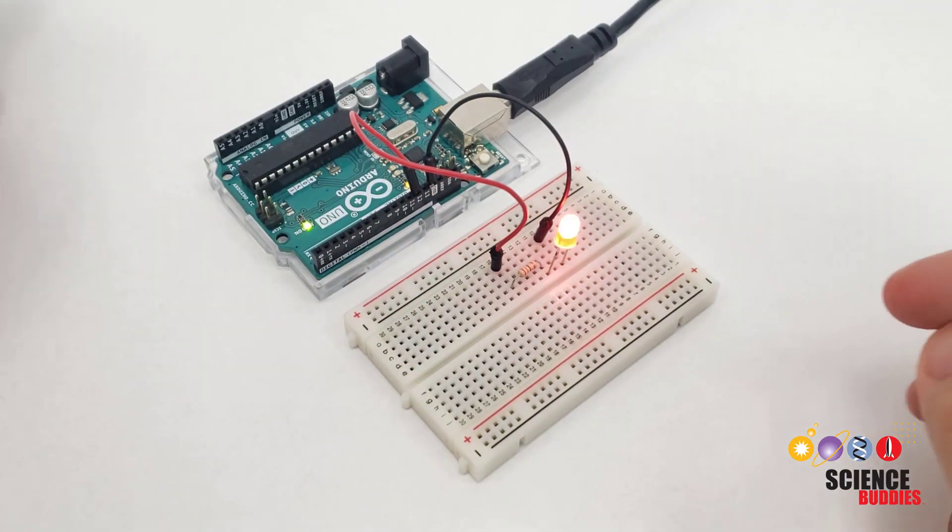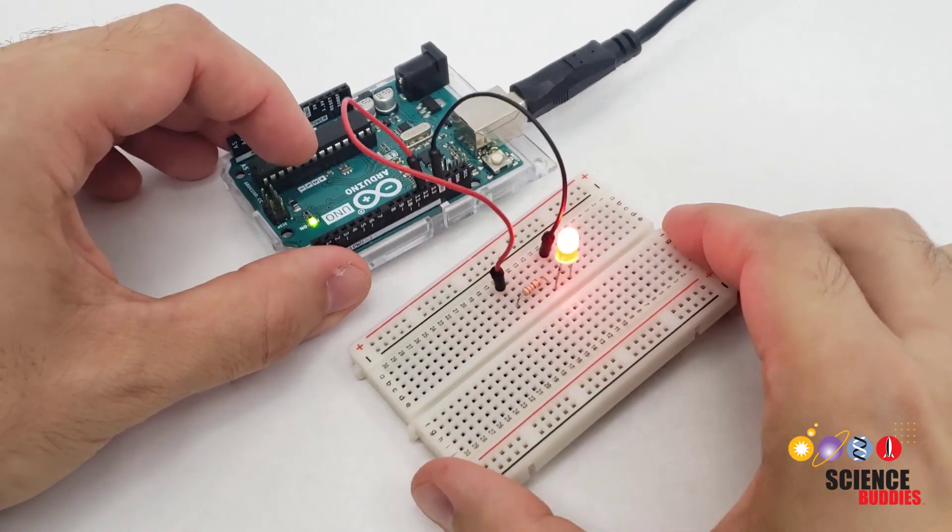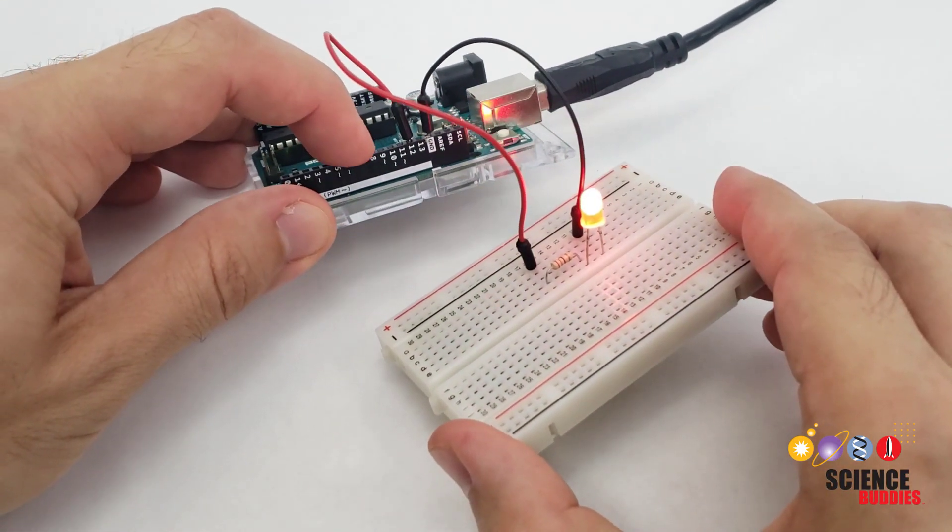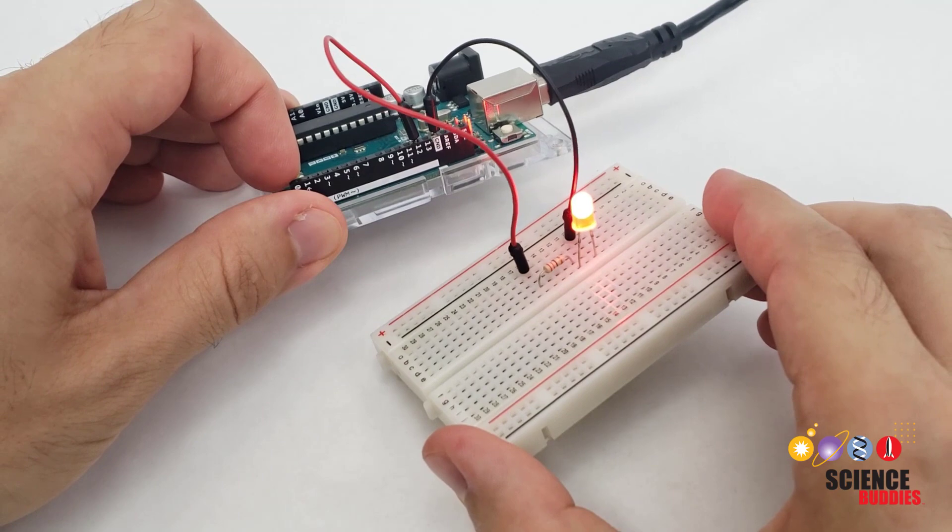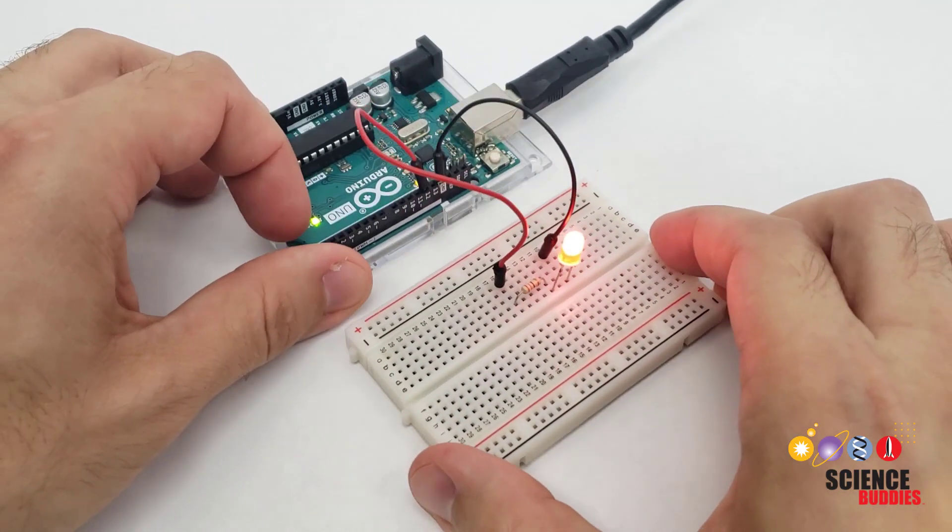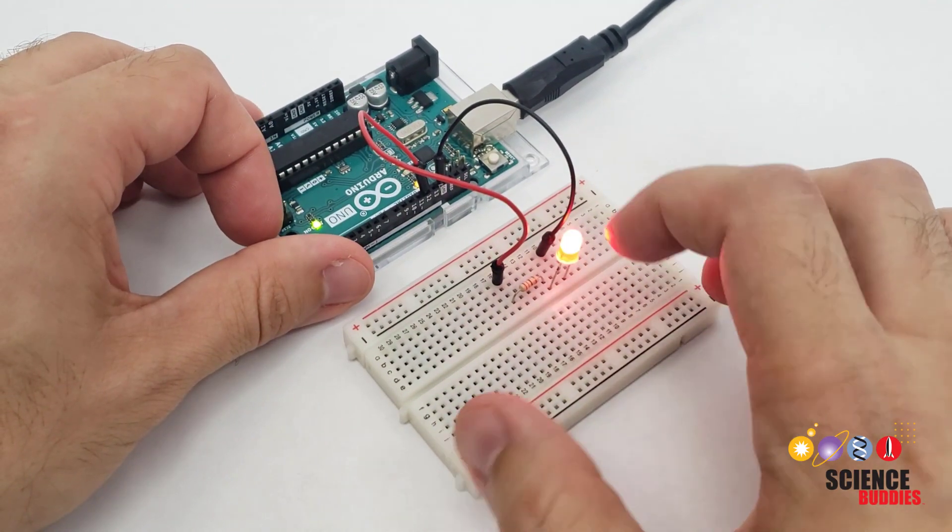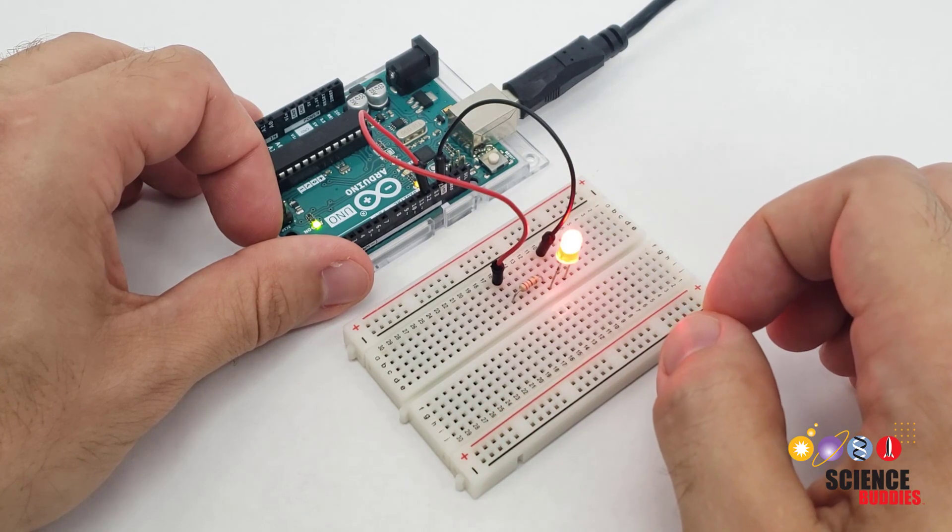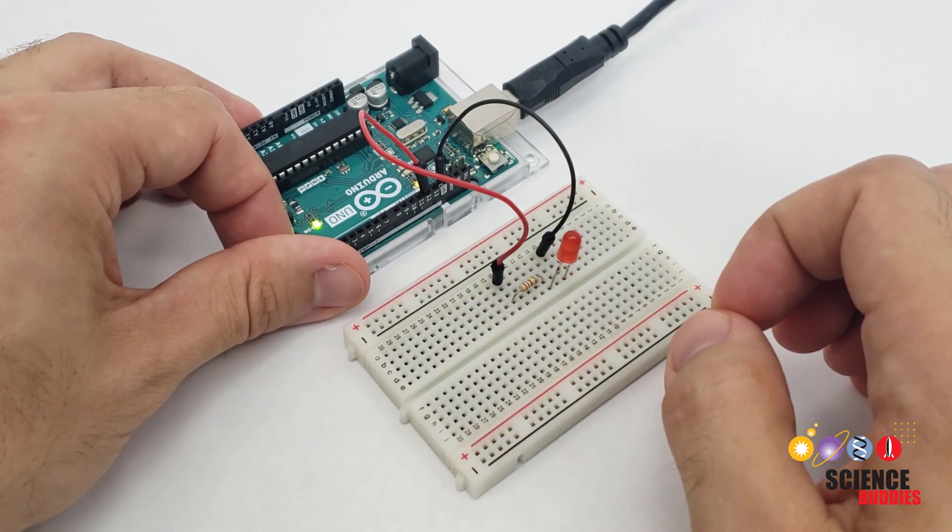Now, here's a programming and circuit building challenge for you. Add another LED that is connected to Arduino pin 8. Edit your code so that LED blinks on and off at the same time as your first LED. Pause the video here and try it out.